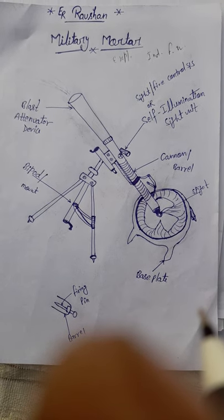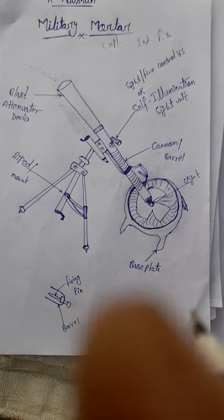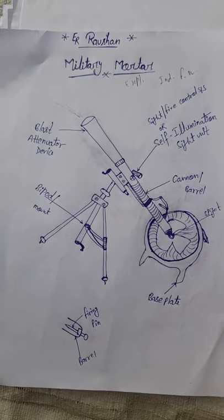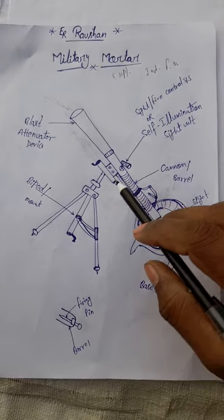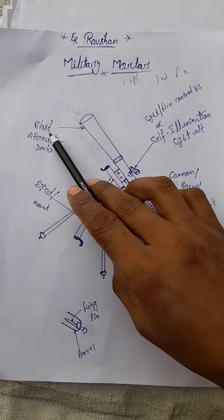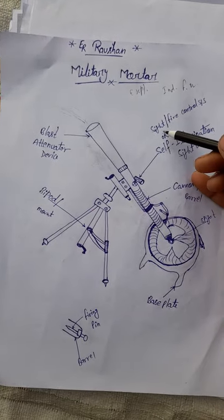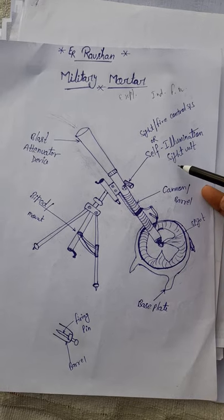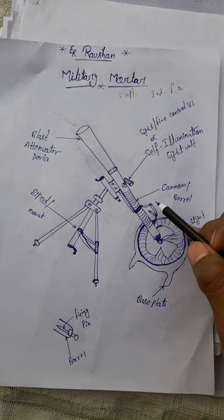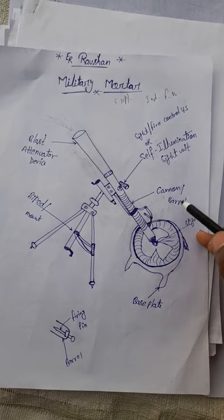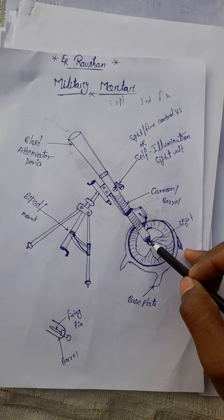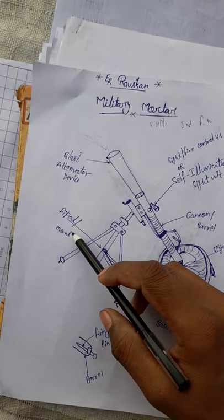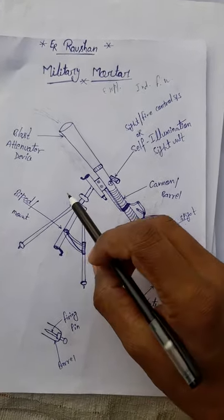Hi friends, today the new topic is military mortar, also known as mortar. You see here, this part is the blast attenuator device, this is the sight or fire control system, also known as self-illumination sight unit. Moving forward, this is the cannon or barrel, this is the spigot, and this portion is the base plate, and this is the bipod mount.